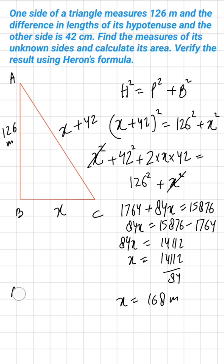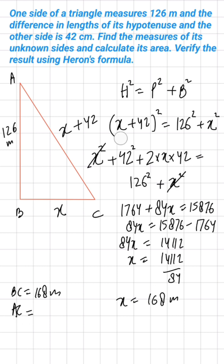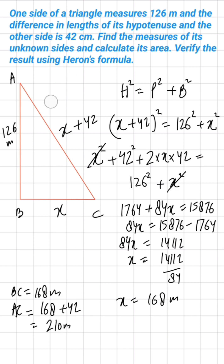So x is 168 meters, which means BC is 168 meters. The hypotenuse AC is 42 more than that, so AC = 168 + 42 = 210 meters. We have now found both unknown sides.